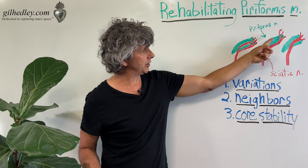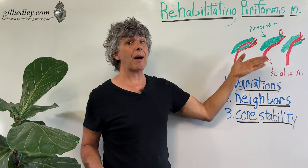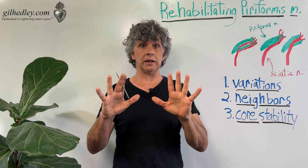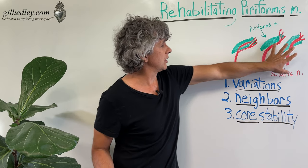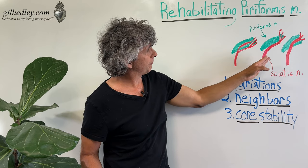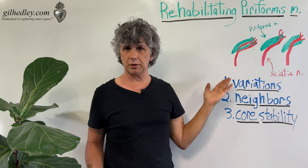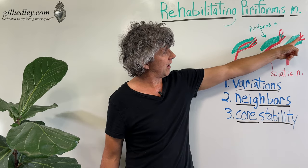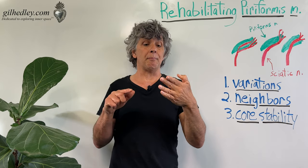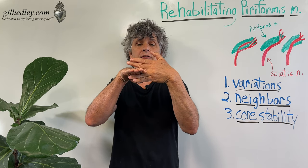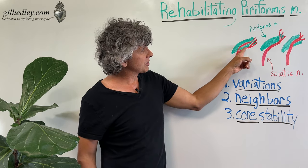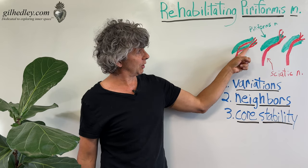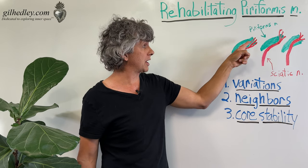Here's the piriformis muscle tissue, and here's the sciatic nerve popping out underneath it. This is from the external perspective, looking in at the gluteal region. Most typically the sciatic nerve has a peaceful relationship underneath the piriformis. But sometimes the entire sciatic nerve will pop through the middle and part the tissues of the piriformis. And sometimes just part of the sciatic nerve will pop through the middle and the rest will go underneath. I've even seen part of it come over the top and part into the middle.